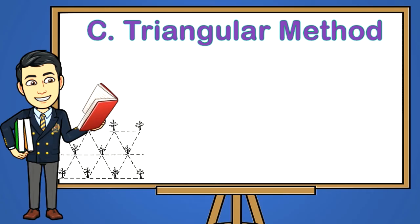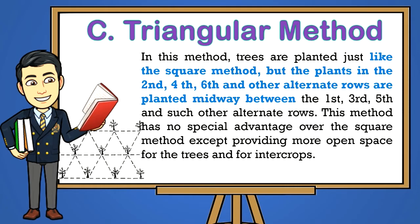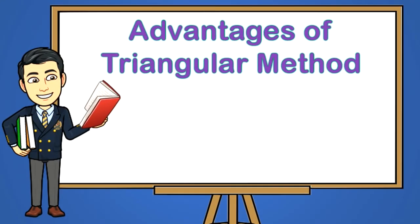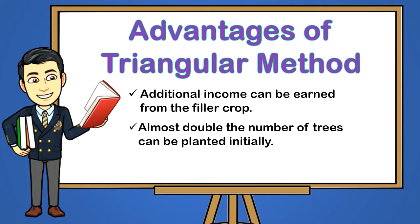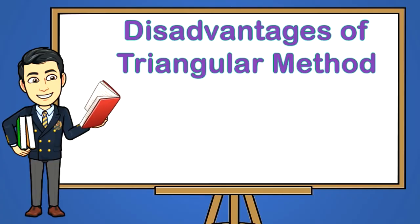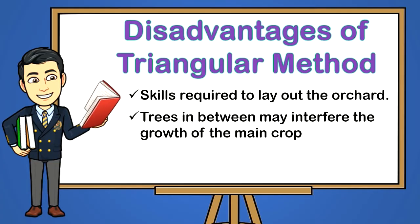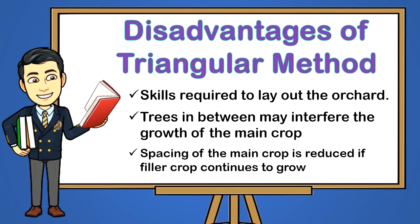C — Triangular Method. In this method, trees are planted just like the square method, but the plants in the second, fourth, sixth, and other alternate rows are planted midway between the first, third, fifth, and such other alternate rows. This method provides more open space for the trees and for intercrops. Advantages: one, additional income can be earned from the filler crop; two, almost double the number of trees can be planted initially; three, full use of land is possible. Disadvantages: one, skills required to lay out the orchard; two, trees in between may interfere with the growth of the main crop; three, spacing of the main crop is reduced as the filler crop continues to grow.